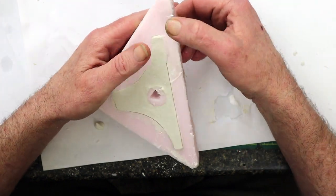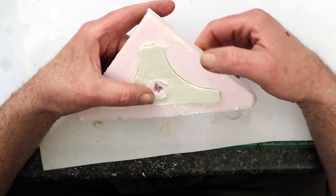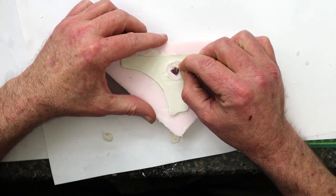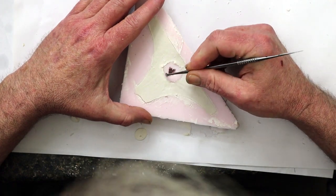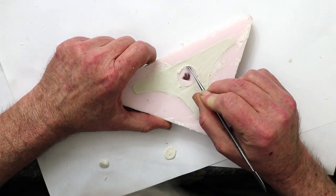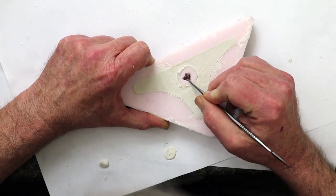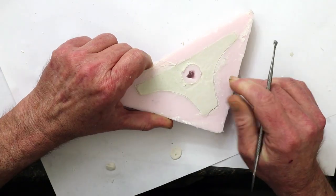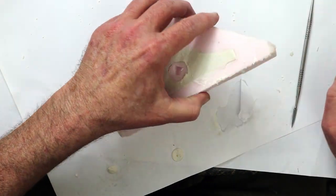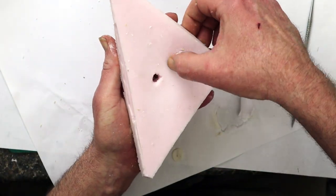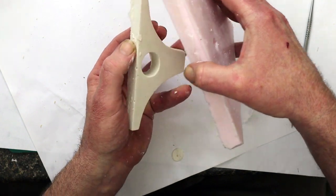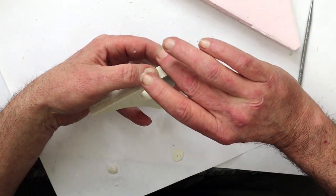The sides are separating from the plaster very nicely. And the relief hole did its job. Well, that certainly came out a lot easier than I expected.